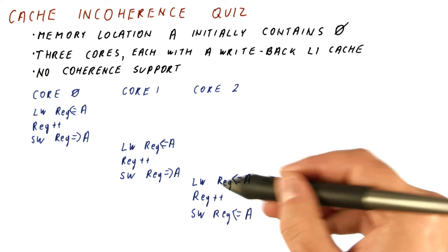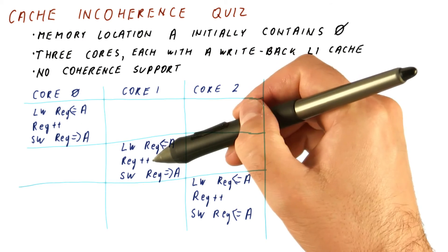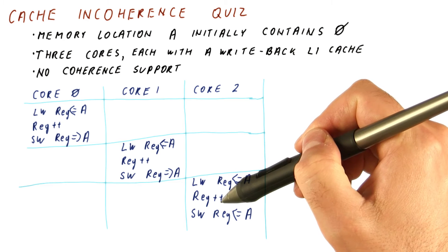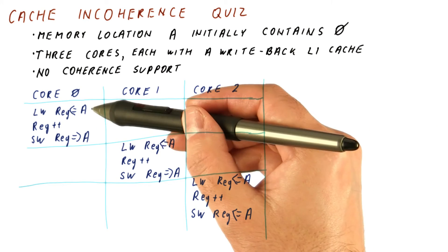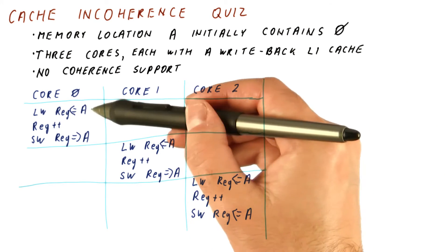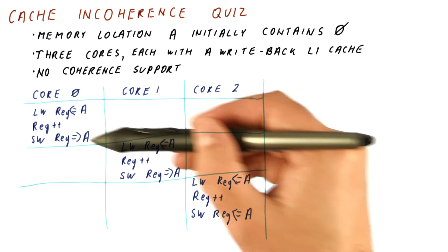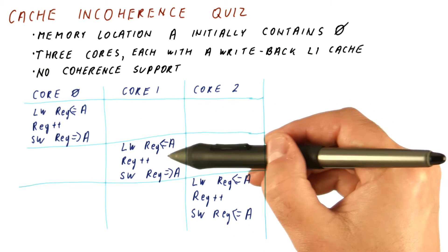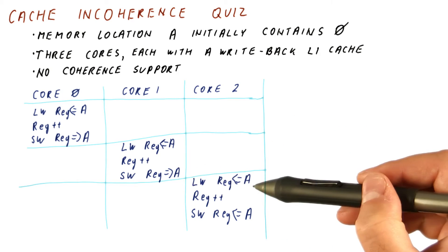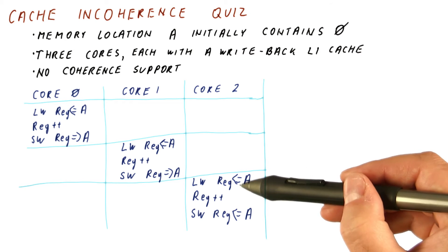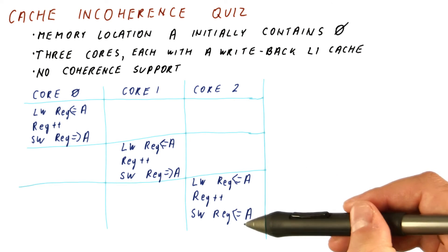Note that these are happening one after the other. So without caches, core zero would be loading zero and writing a one; core one would read one and put a two back in A; and then core two would read two and put a three.